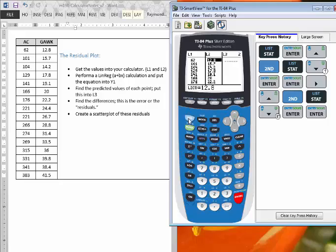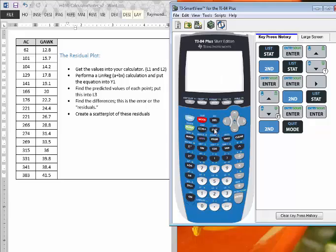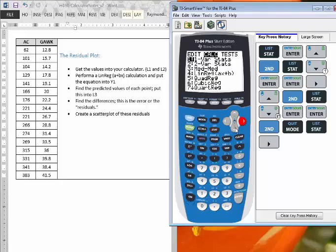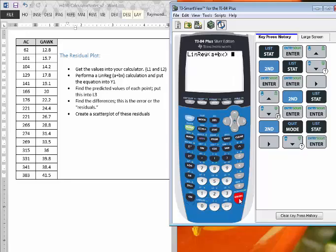Let's go to the home screen, second function and mode, so that quits to the home screen, and then I will press stat, right arrow to calc, and then we've done this enough times that you know that it's number 8. So you can either press the number 8, or scroll down to where it says LINREG A plus BX, press enter to select that, and now I'm going to bypass the L1 and L2 because that's the default.